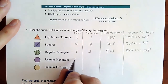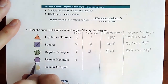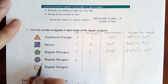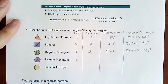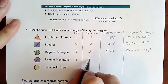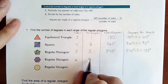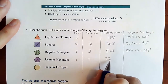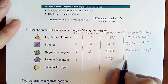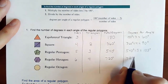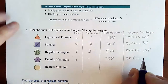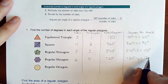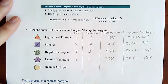On a hexagon, you have six sides. We can create three diagonals from one corner, which makes four triangles. If you have four triangles, four times 180 is 720. Taking our 720 degrees and splitting it six ways gives us 120 degrees each.